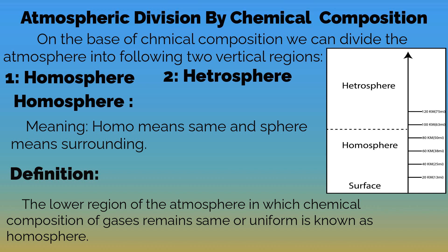Definition: The homosphere is the lower region of the atmosphere in which the chemical composition of gases remains the same or uniform throughout.